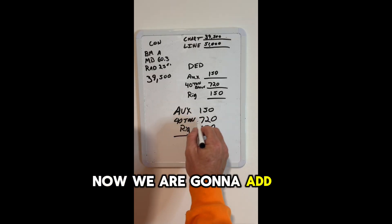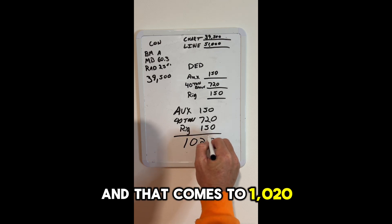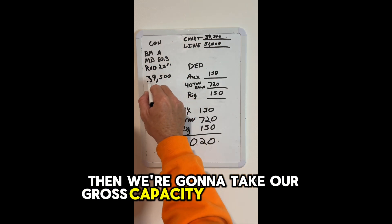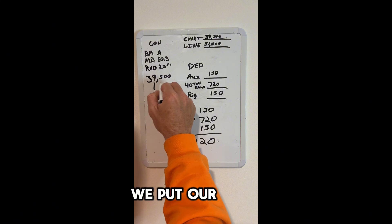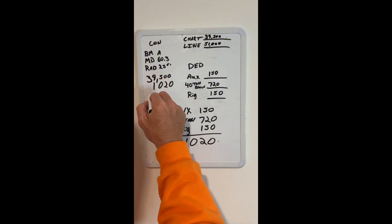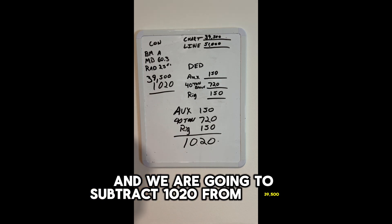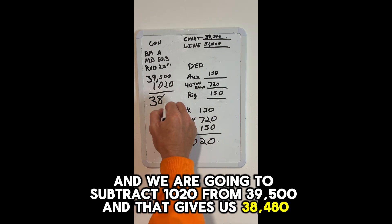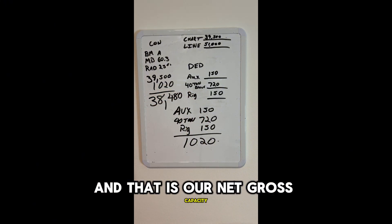We're going to add up our total for our deductions, and that comes to 1,020. Then we're going to take our gross capacity, which was 39,500, and put our 1,020 below it. We're going to subtract 1,020 from 39,500, and that gives us 38,480. And that is our net capacity.